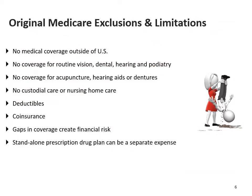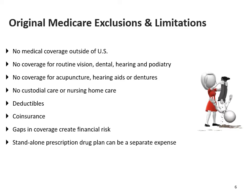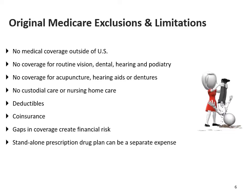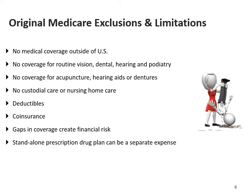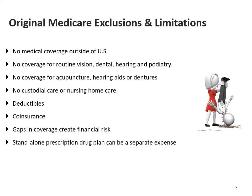Original Medicare has exclusions and limitations that can cost you a sizable amount of money. There is no medical coverage outside of the US, no coverage for routine vision, dental, hearing, and podiatry, no coverage for acupuncture, hearing aids, or dentures, and no custodial care or nursing home care. Medicare also has deductibles, coinsurance, and a Part B premium, creating financial risks if you elect only original Medicare as your health insurance.